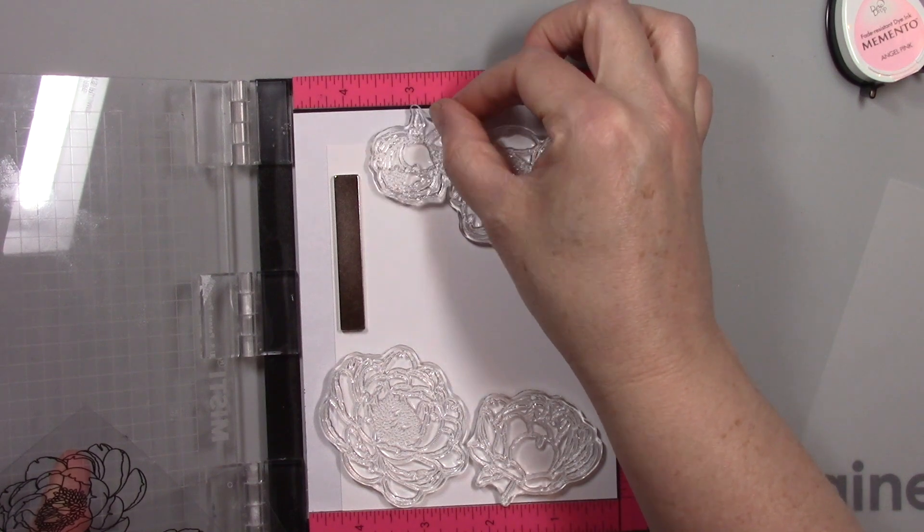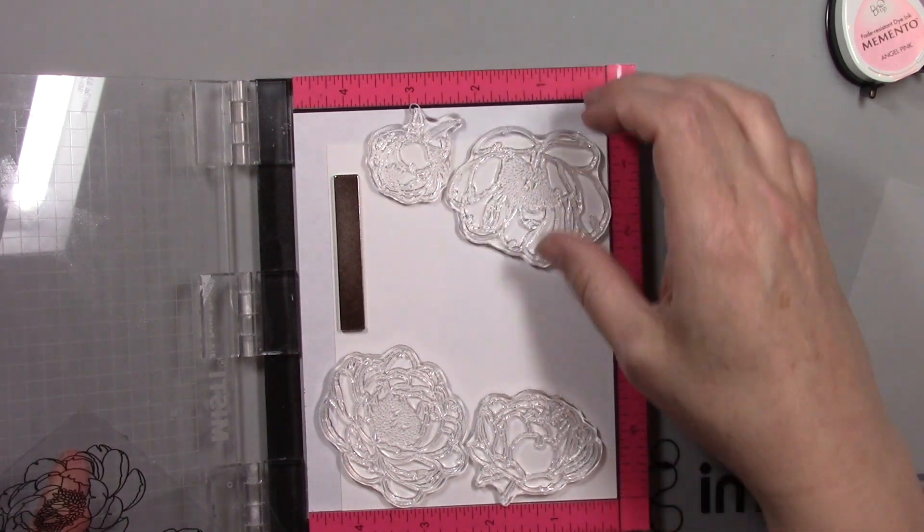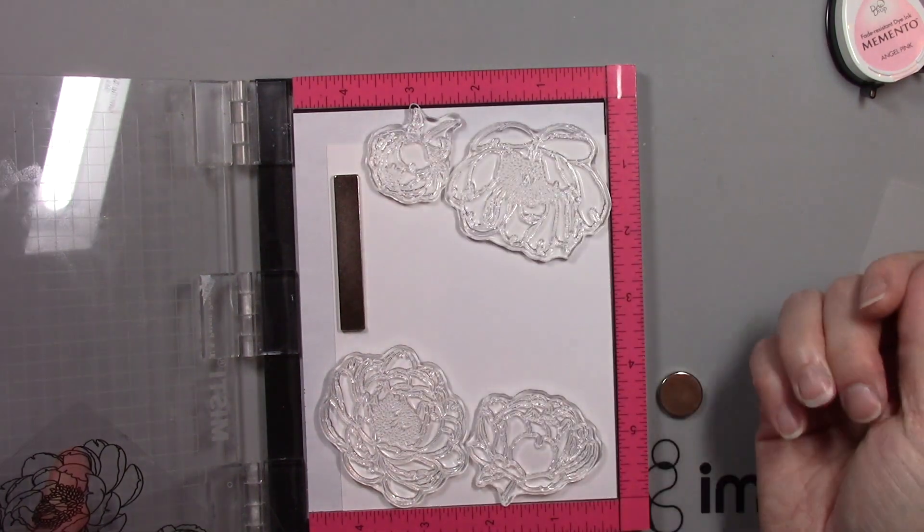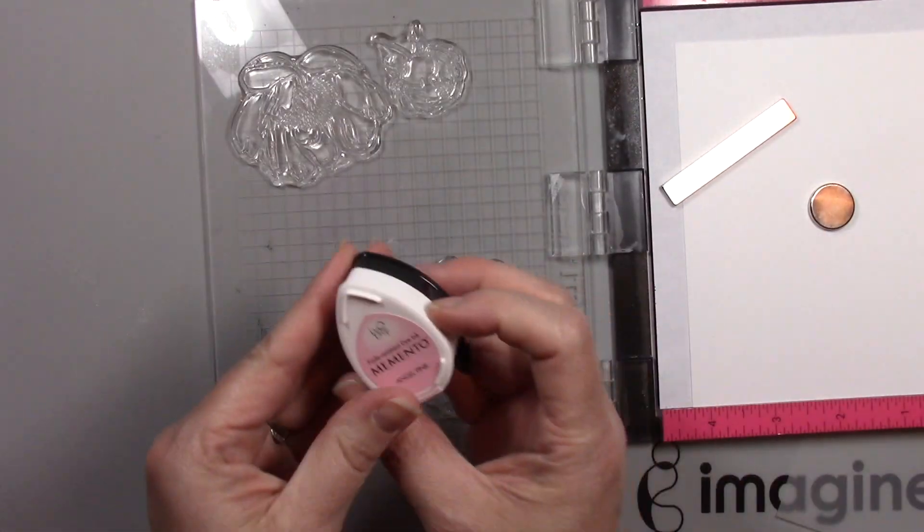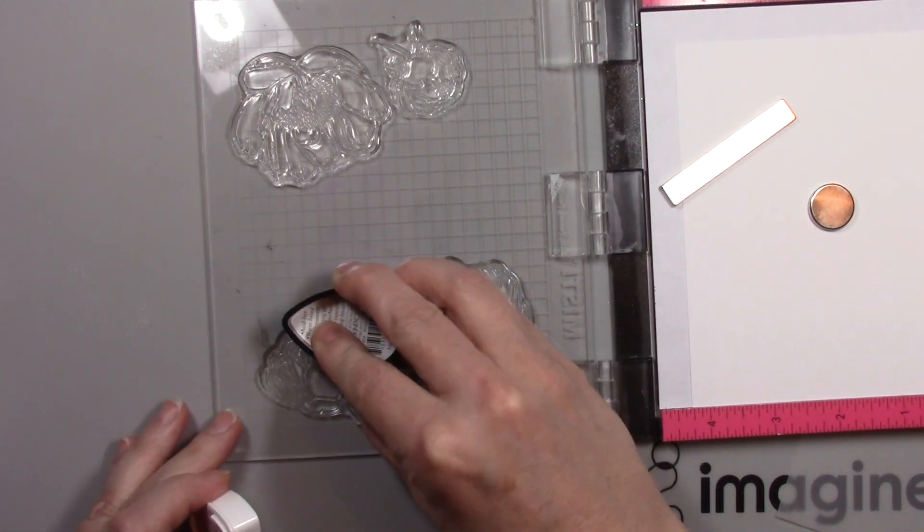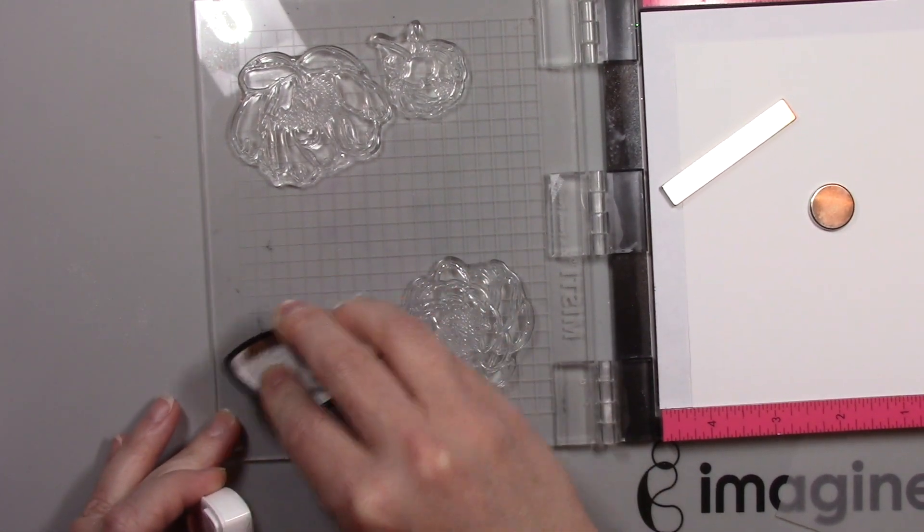I'm taking these peonies from Mama Elephant, laying them on my white cardstock in a MISTI. For this you will need some kind of stamping platform as you'll be reusing the positioning of those stamps.